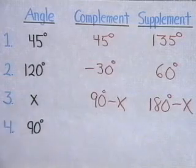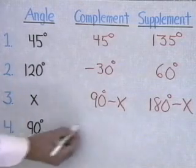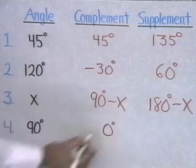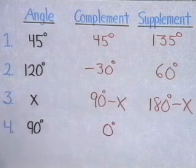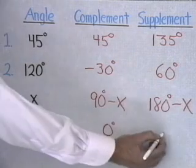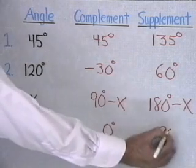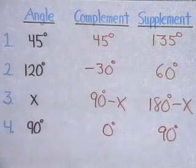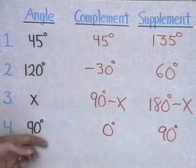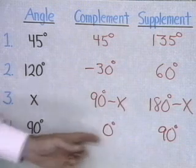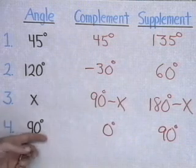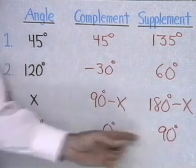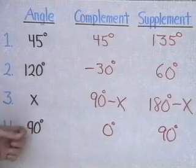Here's our last one: 90 degrees. The complement of 90 is 0 degrees, and the supplement of 90 is 90 degrees. So 90 and 0 add up to 90, and 90 plus 90 is 180 degrees.